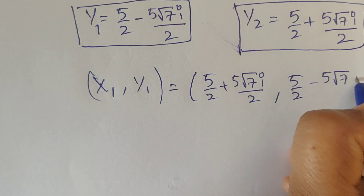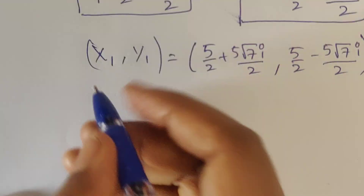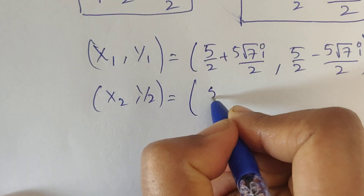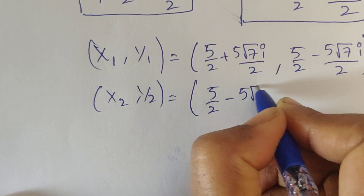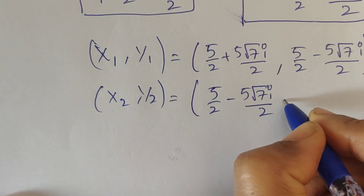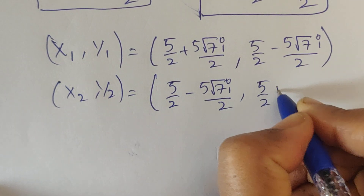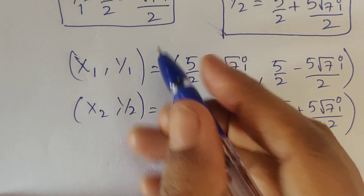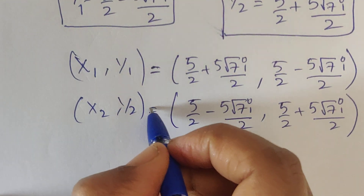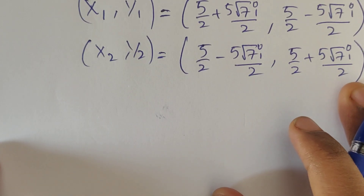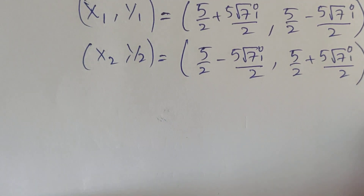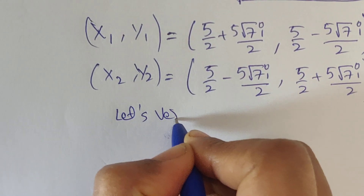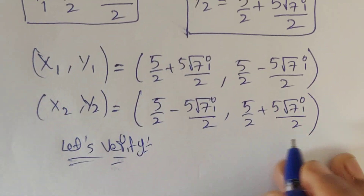So the two solution pairs are: (x₁, y₁) = (5/2 plus 5√7 i /2, 5/2 minus 5√7 i /2) and (x₂, y₂) = (5/2 minus 5√7 i /2, 5/2 plus 5√7 i /2). These are complex solutions — there is no real solution for this problem. Let's verify these values.